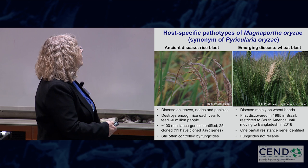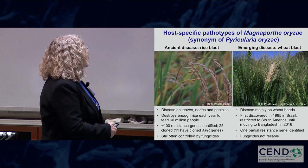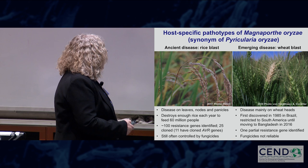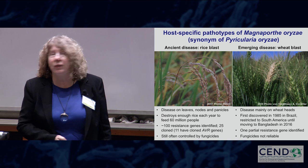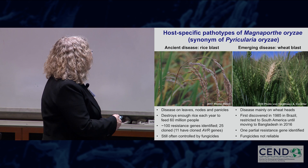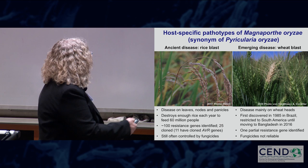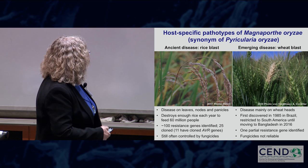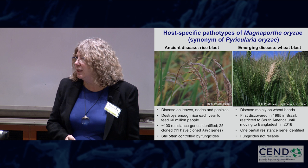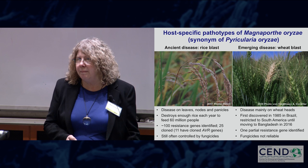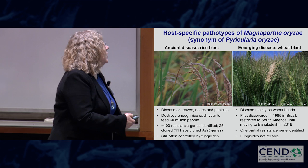The fungus Magnaporthe oryzae causes disease on leaves, nodes, and panicles — basically all above-ground parts of the plant. It destroys enough rice each year to feed about 60 million people. The community has identified over 100 resistance genes; at least 25 have been cloned, and 11 have cloned corresponding avirulence genes. But it's still often controlled by fungicides because within one to three years the fungus is able to overcome any resistance genes breeders put out there.